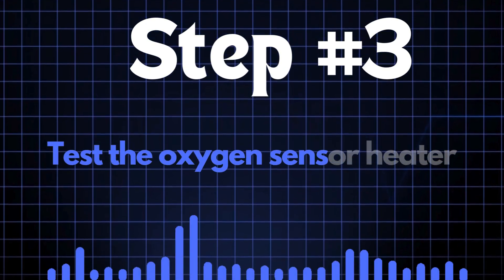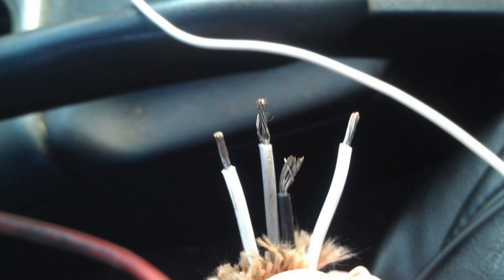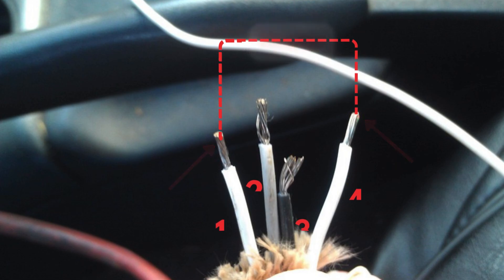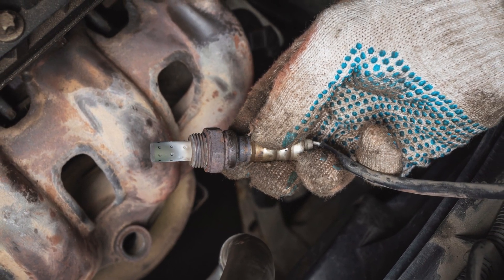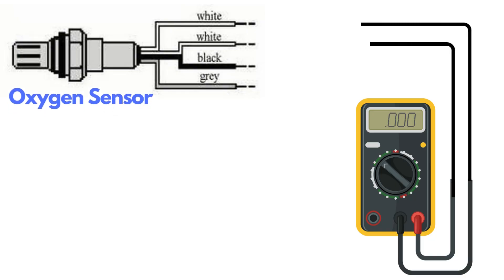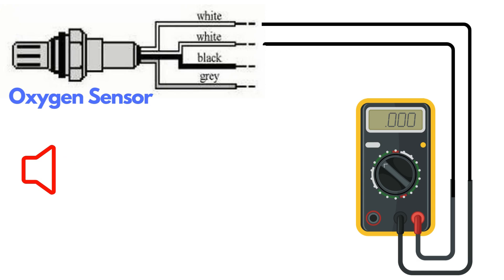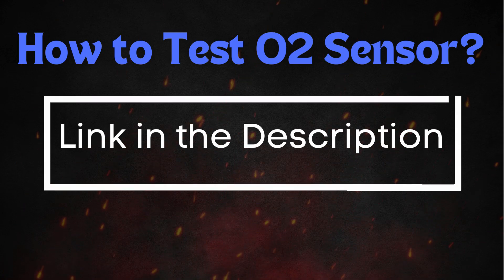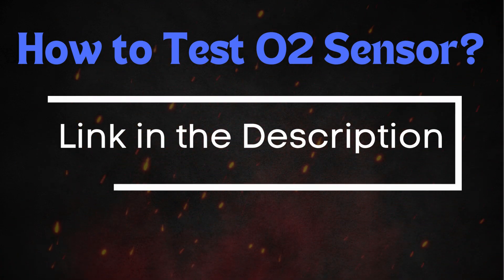Step 3: Test the oxygen sensor heater. Oxygen sensors typically have four wires, and two of them — usually the same color — are dedicated to the heater circuit. Over time, the heater circuit can burn out and stop functioning properly. To test it, use a multimeter set to check for continuity, then place the probes on the two heater wires. If the circuit has continuity, the multimeter will beep, indicating the heater is functioning. If there's no beep, the heater circuit is broken and you'll need to replace the oxygen sensor. For a more detailed guide on how to test the oxygen sensor, check out our in-depth video on this topic.